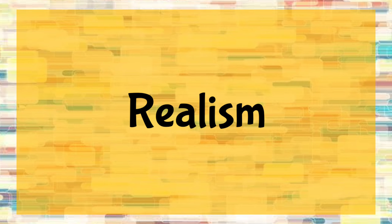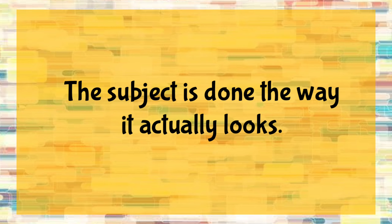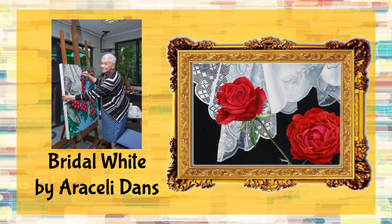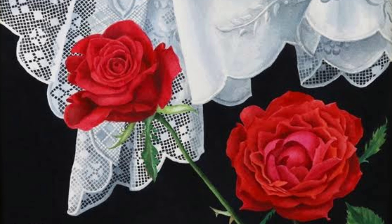First is realism. In realism, the subject is done the way it actually looks. An example of this is the painting entitled Bridal White by Araceli Danz. As you can notice, it is very realistic and is done the way it actually looks.